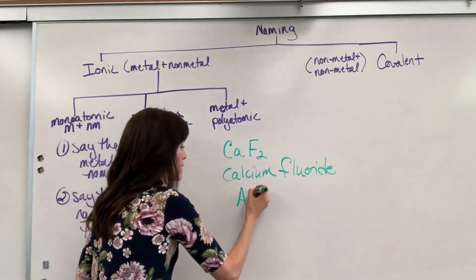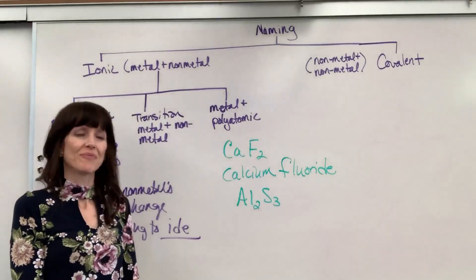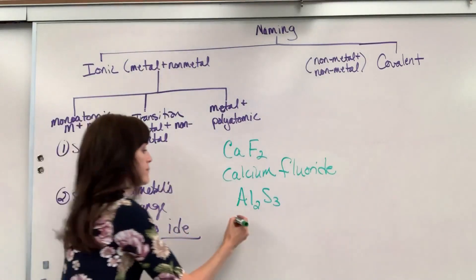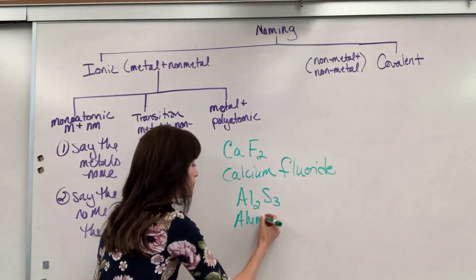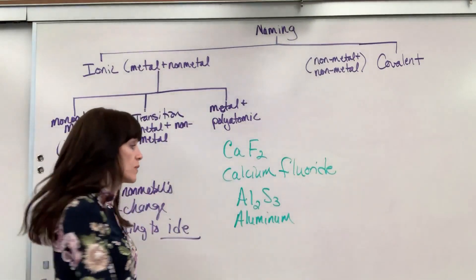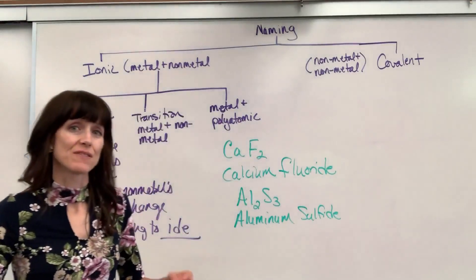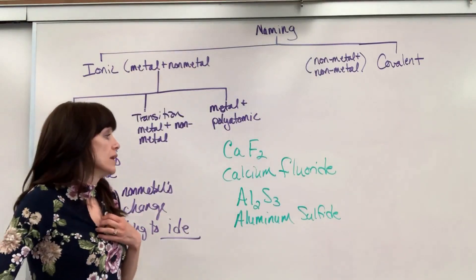Let's take Al2S3. I say the metal's name: aluminum. Then I say the non-metal's name, which is going to be sulfide instead of sulfur.